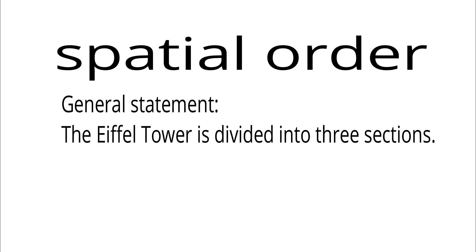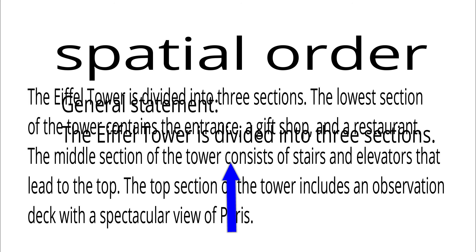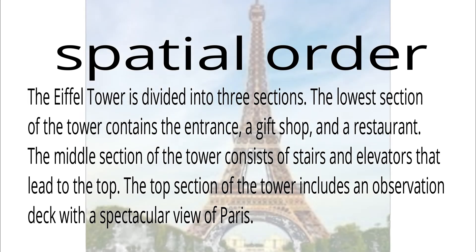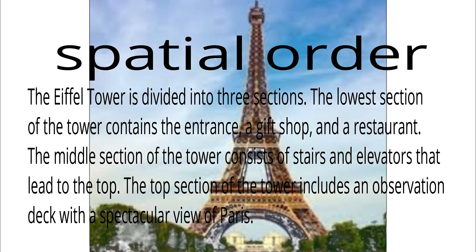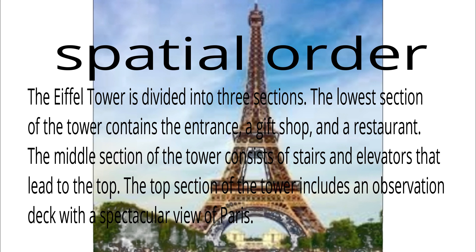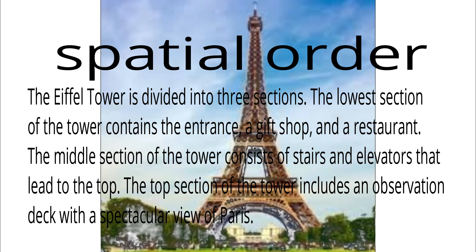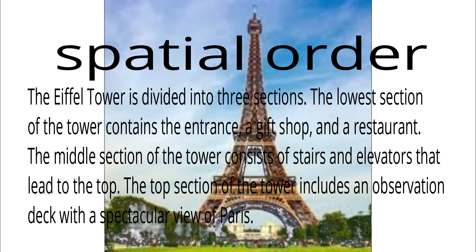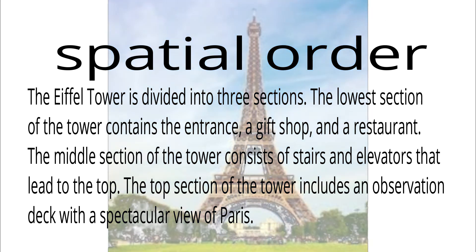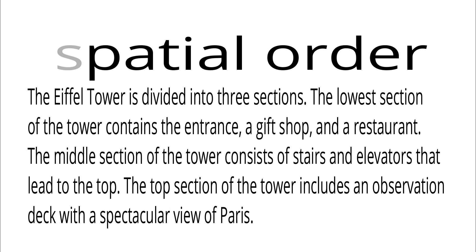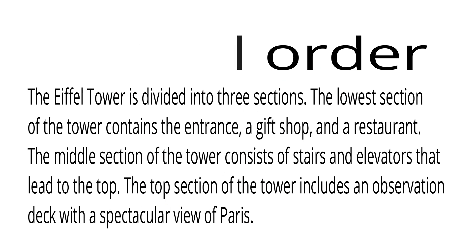For spatial order, you begin with the general statement — like 'The Eiffel Tower is divided into three sections' — then you proceed to describe the structure from bottom to top. Example: 'The Eiffel Tower is divided into three sections. The lowest section of the tower contains the entrance, a gift shop, and a restaurant. The middle section of the tower consists of stairs and elevators that lead to the top. The top section of the tower includes an observation deck with a spectacular view of Paris.' With this spatial order, readers can visualize the building clearly. Let's examine questions relating to the spatial order in the next episode.